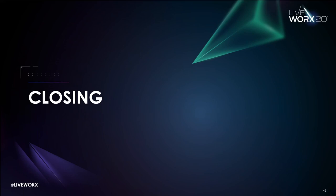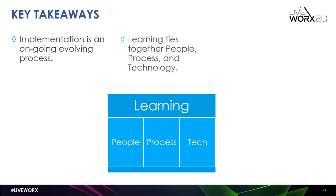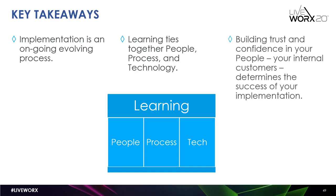There you have it — people, process, technology, and learning. Let me recap the top three takeaways from this session. First, implementations and administration are not events but ongoing processes that continually evolve. Learning is an overarching activity for how you manage your implementations, people, processes, and technology. And the most important part of your implementation — the deciding factor that will make or break you — is how you develop trust and confidence with people, primarily your end users. This means frequently interacting with your end users through a variety of means like walkabouts, hoteling, and user meetings. Your super users are your best resource.